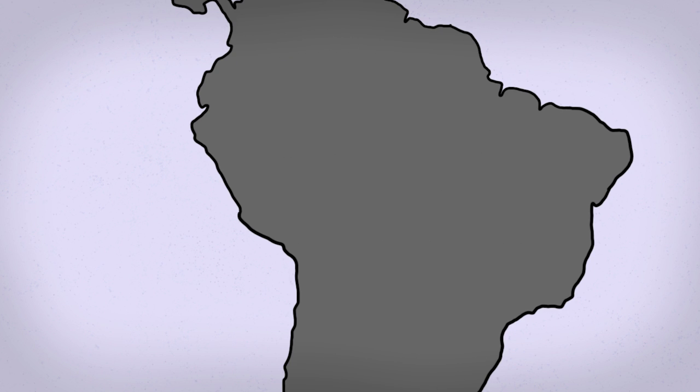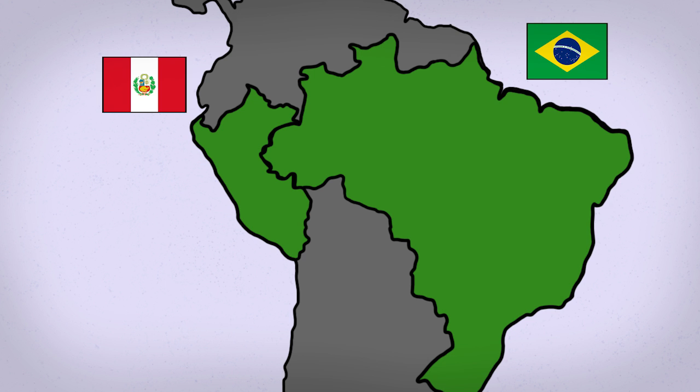For example, in 2010, the governments of Brazil and Peru signed an energy agreement that included plans for hydroelectric plants in the Peruvian Amazon River Basin. The main intent being the export of electricity for Brazil.